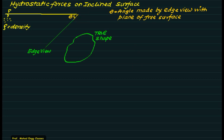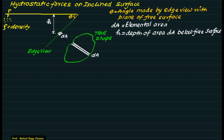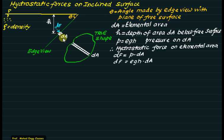The edge view makes an angle theta with the free surface. Consider an elemental area dA at a depth h from the free surface level. Since pressure is a function of height only (density is constant), the pressure acting on area dA equals rho*g*h, perpendicular to the plane. The hydrostatic force on the elemental area is given by dF = pressure × area = rho*g*h × dA.